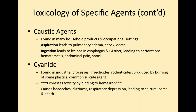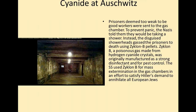Have you heard of Auschwitz, the concentration camps in Germany? Prisoners who were too weak to be good workers were sent to the gas chamber. They were told they were going to take showers, but instead, Zyklon B tablets — made from hydrogen cyanide — would release a poisonous gas into the showers, killing all the people inside. That was Hitler's method of annihilating European Jews at the time.